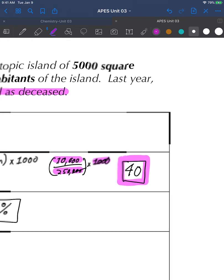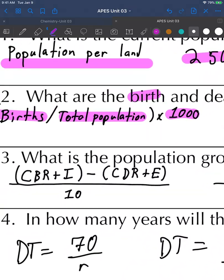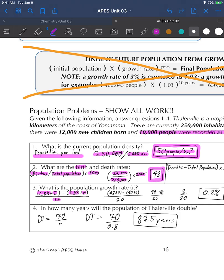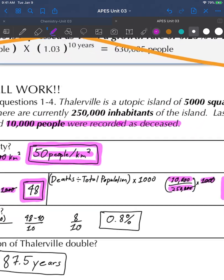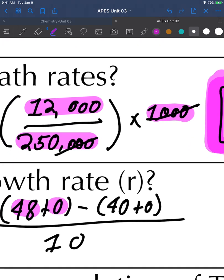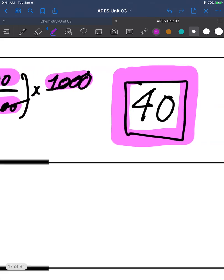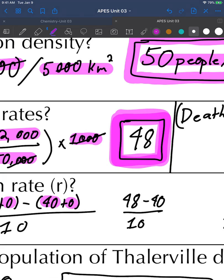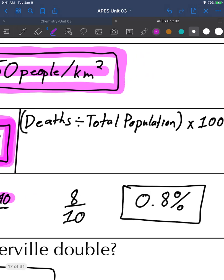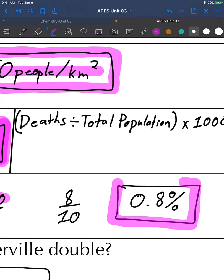The population growth rate is crude birth rate plus immigration minus crude death rate plus emigration divided by 10. We don't have immigration and emigration in this problem because it's not mentioned, so we can assume it to be zero. 48 was our birth rate, immigration of zero, death rate was 40, emigration of zero, divided by 10. 48 minus 40 gives you 8 over 10, which gives us a growth rate of 0.8 percent.